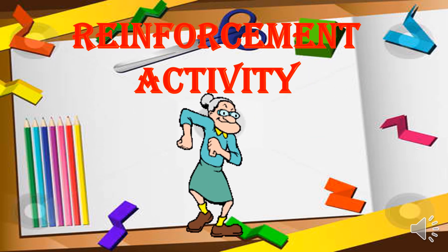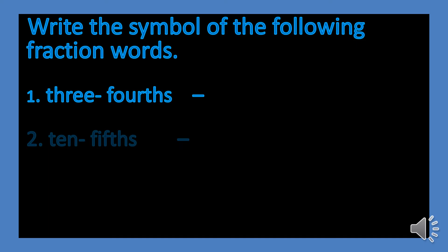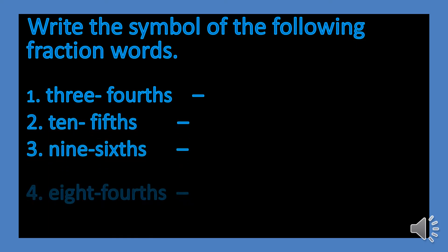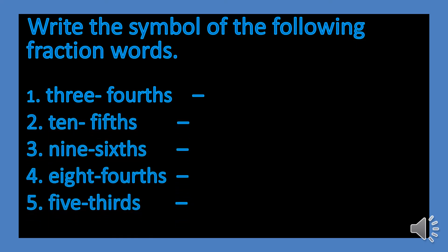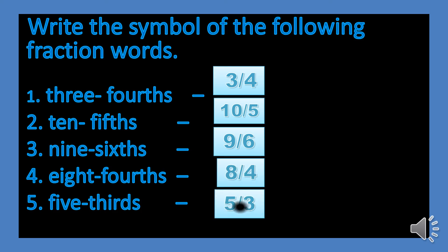Let us answer this. Write the symbol of the following fraction words: three-fourths, ten-fifths, nine-sixths, eight-fourths, and five-thirds. So three-fourths is 3/4. Next, ten-fifths is 10/5. Next, nine-sixths is 9/6, eight-fourths is 8/4, and five-thirds is 5/3.